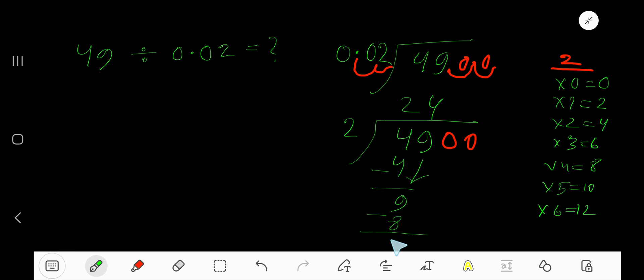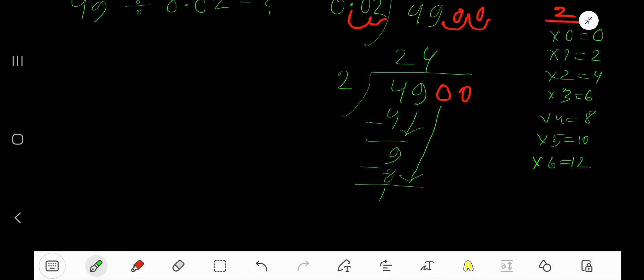Subtract: you're getting 1. Bring down this 0. So 2 goes into 10 how many times? 5 times. 5 times 2 is 10. Subtract: you're getting 0. Bring down this 0.